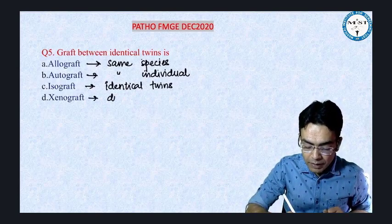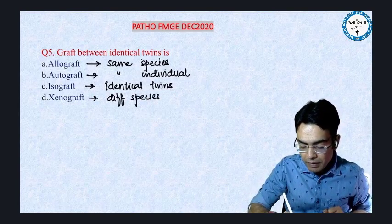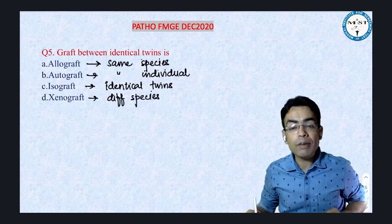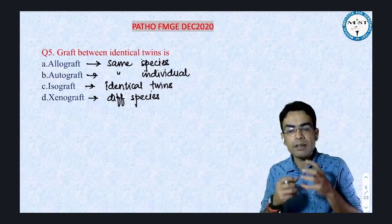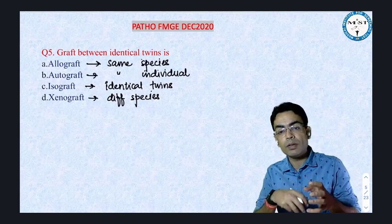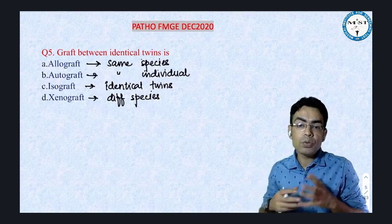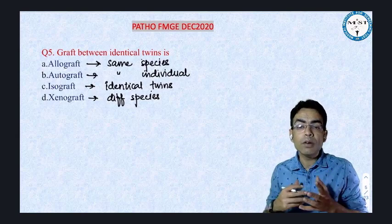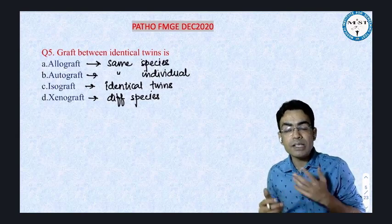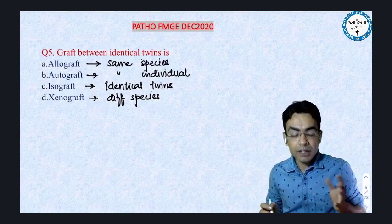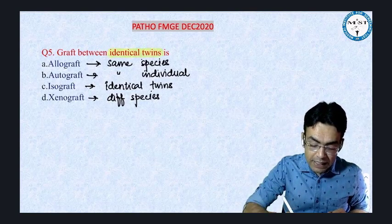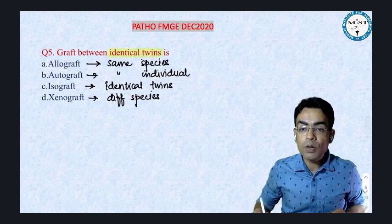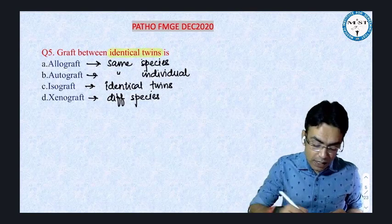Xenograft is different species. For example, for a valve replacement, we take the graft from pigs and cows — those kinds of grafts are called xenograft. But here the examiner has specifically mentioned identical twins.